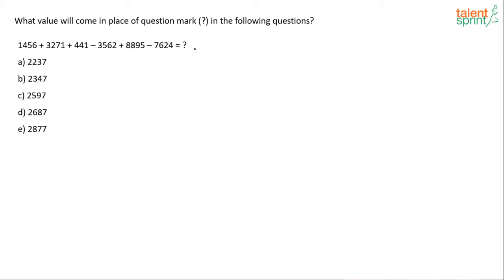The expression is: 1456 plus 3271 plus 441 minus 3562 plus 8895 minus 7624. Before solving, look at the options. My observation is that all options end in 7, so the unit digit method is not applicable here — every answer ends with 7, so I can't find the correct answer using that method. I need to try something else rather than doing the actual full calculation.